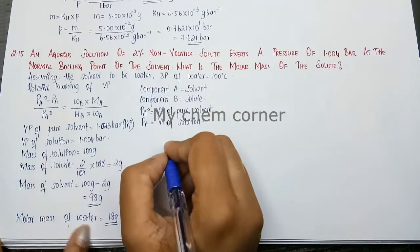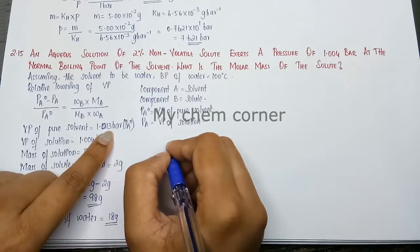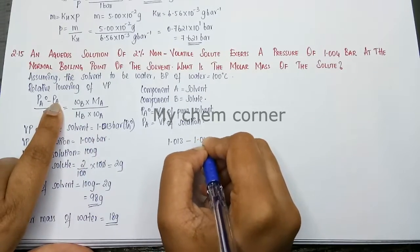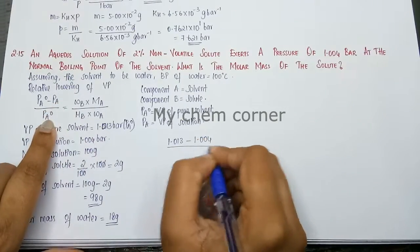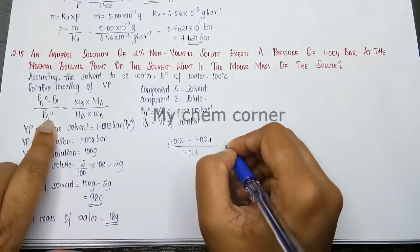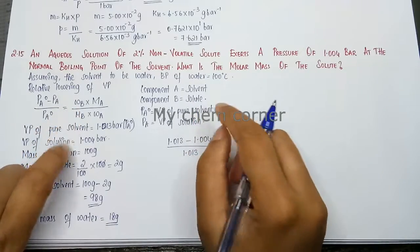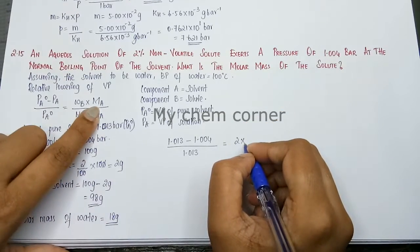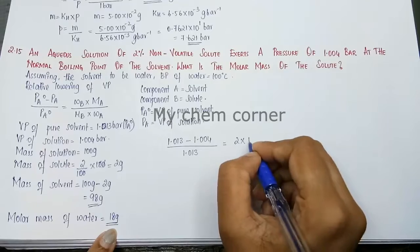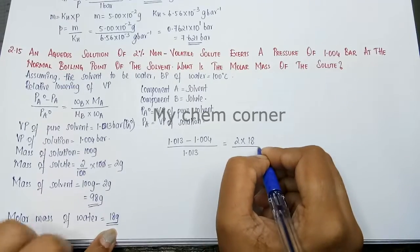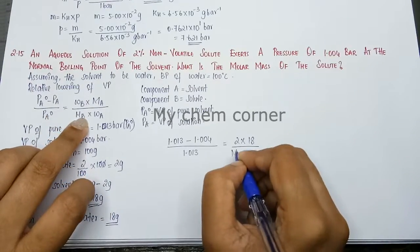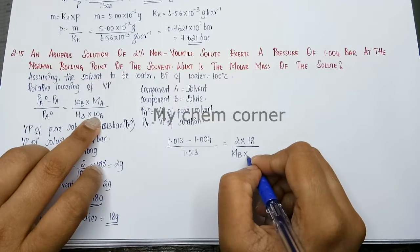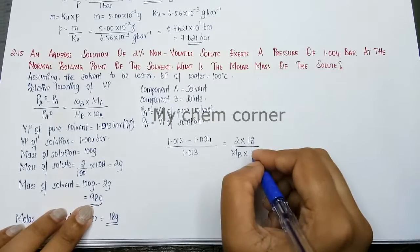Let's substitute it here. So pa0 is 1.013 minus pa is 1.004 divided by pa0 is 1.013 equals wb is the weight of solute. Weight of solute is 2 grams into ma is the molar mass of solvent that is 18 grams divided by mb is the molar mass of the solute, that's what we have to calculate, into wa is the weight of the solvent which is 98 grams.